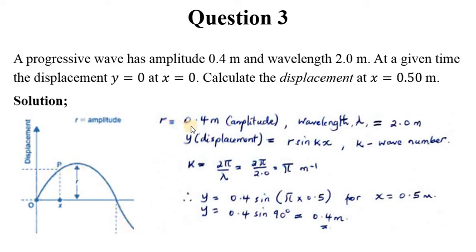So our r from the question is 0.4 meters. The wavelength of the wave itself is 2.0 meters. So y is given by the equation r sine kx where k is wave number. So this k is actually what we are going to find first before we can substitute the values and find y which is the displacement. k equals 2 pi over lambda and lambda is wavelength. Wavelength is given in the question. Therefore, we bring in 2.0 as the denominator of the formula, and therefore we end up having 2 pi divided by 2.0. That is just resulting to pi per meter.